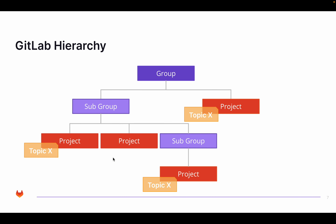GitLab is structured in groups, and underneath groups you have projects. On GitLab.com you will typically have a single top-level group connected to your license, with different subgroups and projects underneath. In a self-managed instance you usually have multiple top-level groups depending on your structure, but underneath every group you can have more than one subgroup or project, and then multiple layers of subgroups and projects to build an entire hierarchy.